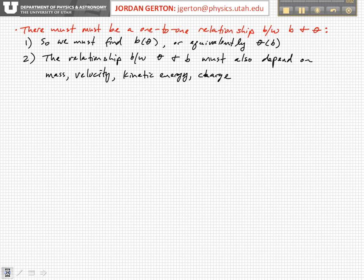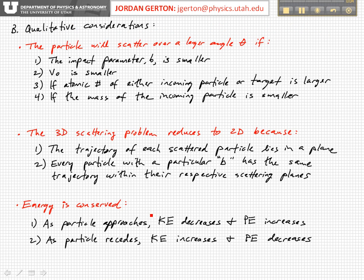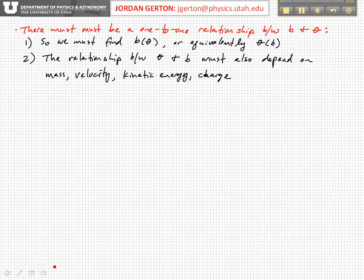So we have these qualitative considerations that we just discussed. If you put all this together, we should realize that there must be a one-to-one relationship between the impact parameter B and the scattering angle theta, the angle through which the alpha particle scatters relative to its initial trajectory.